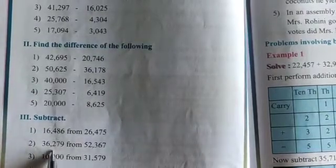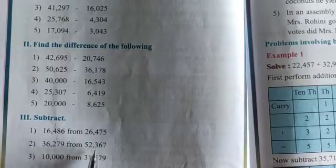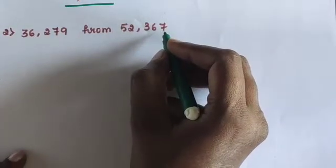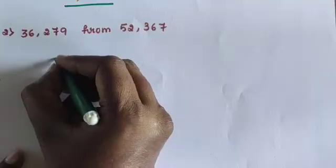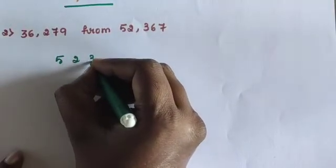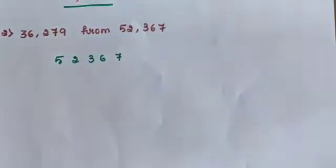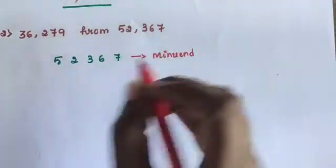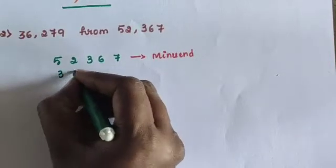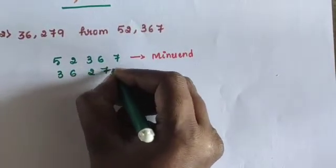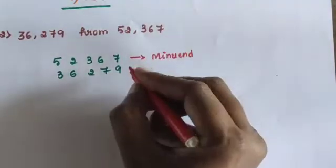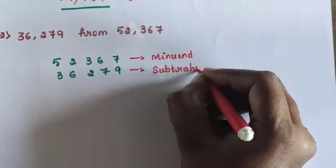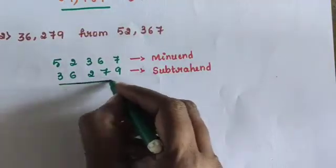Next, question number 2: subtract 36,279 from 52,367. 52,367 is the minuend and 36,279 is the subtrahend. Arrange the numbers in place value columns, then find the difference.